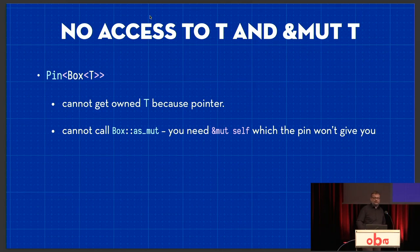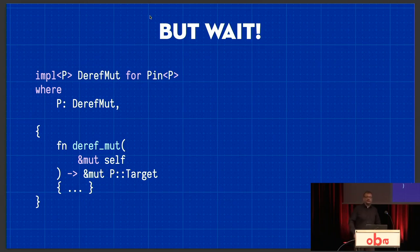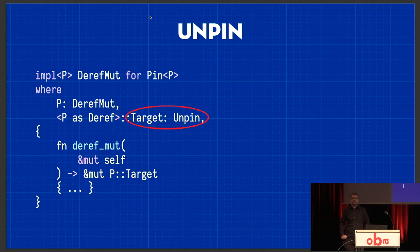That's all Pin does, really. Except — hang on. If you look at Pin, it actually implements DerefMut, which I just said it doesn't. But I wasn't lying — I was just not telling you the whole story, which is this: it actually only implements DerefMut when the target type — so that's our T — for the pointer is something called Unpin.